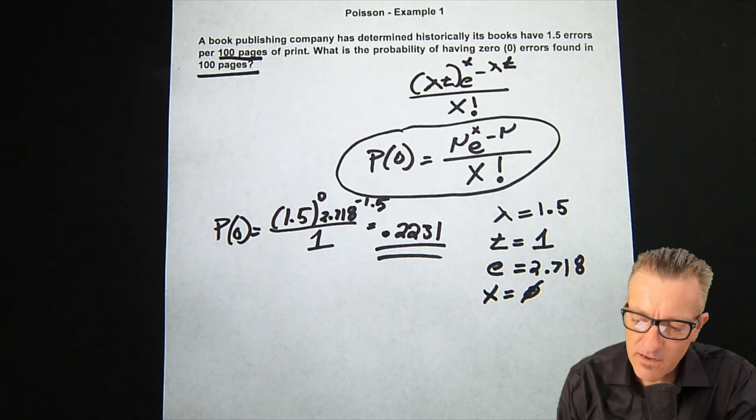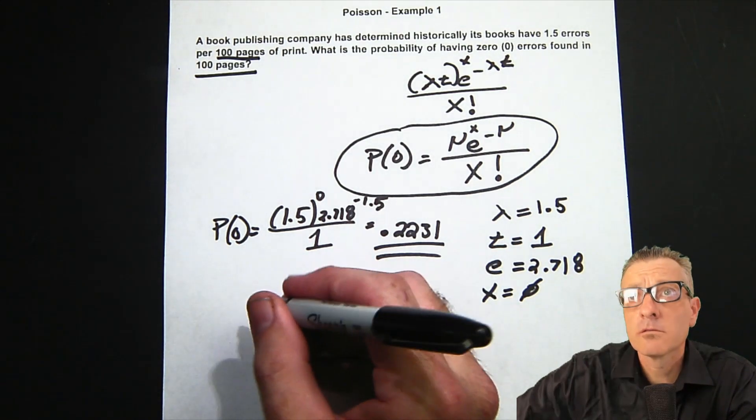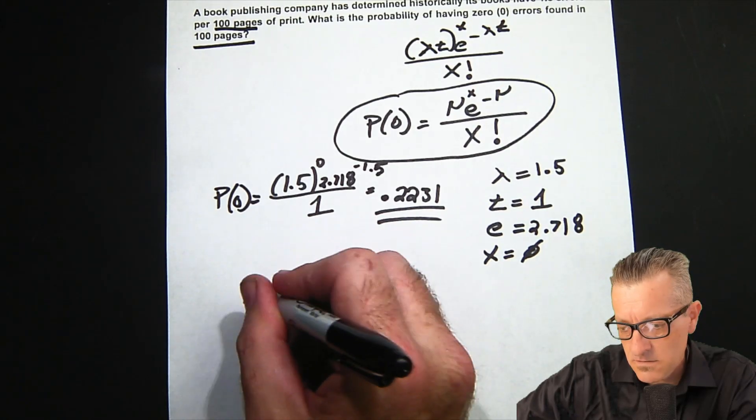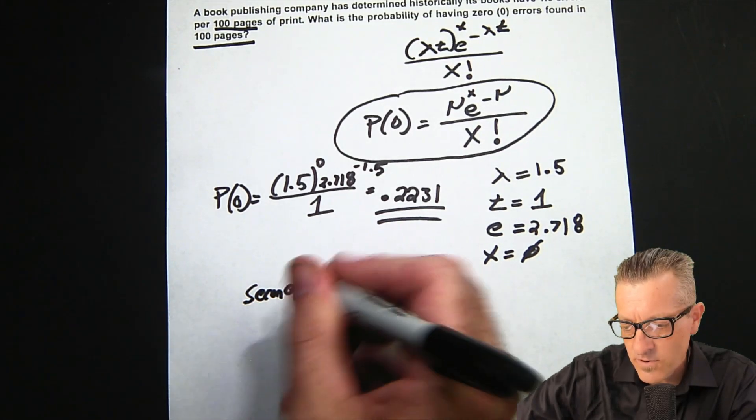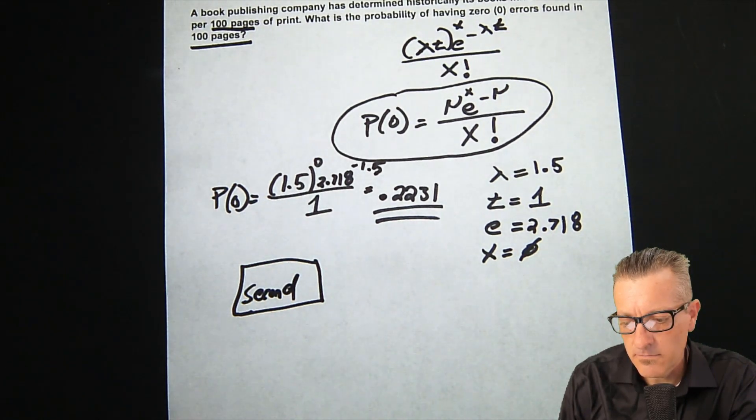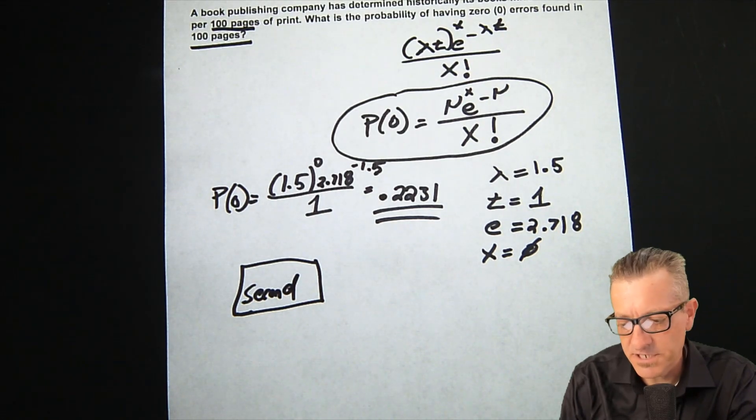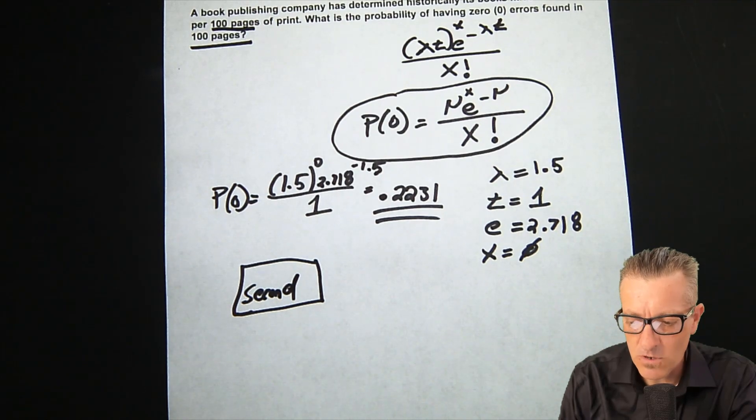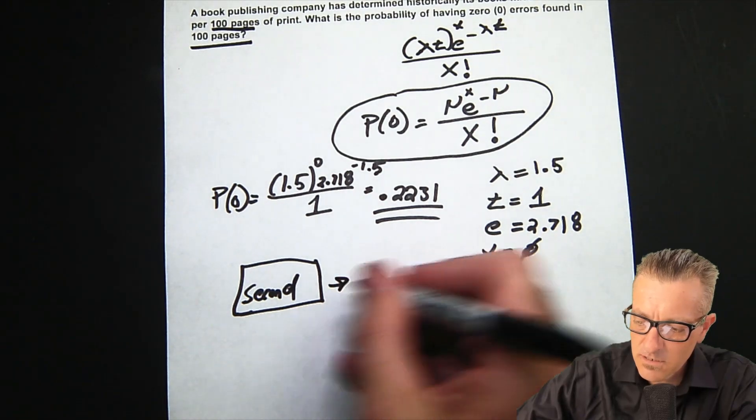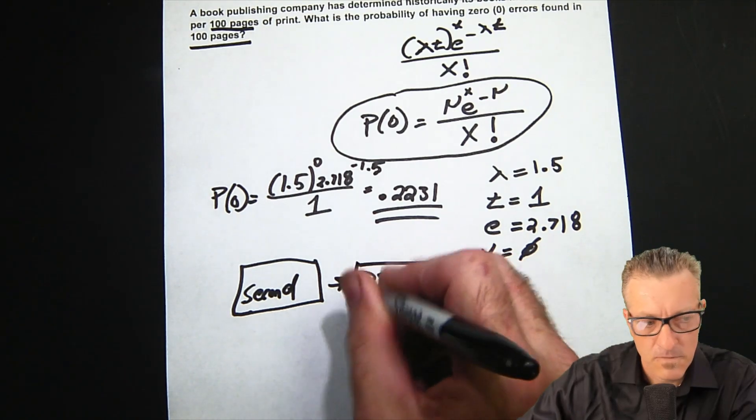So let's do this on the calculator. I'll pull up the calculator in just one second. On the calculator, we go to second—the second button is the part that makes our accessory, essentially the alt of our keyboard on our TI-83/84, function.